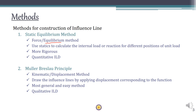In the static equilibrium method, we basically use force or equilibrium methods such as the consistent deformation method, which we use for analyzing indeterminate beams. What we do is calculate the reaction or the function for each position of the unit load — selecting three to four positions. For each unit load position we find out the reaction or whatever function we are drawing the ILD for, and then plot the ILD. The second method is the Müller-Breslau principle, which gives only a qualitative ILD but is a quick method for drawing the shape of the ILD.